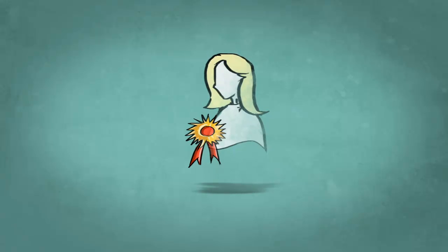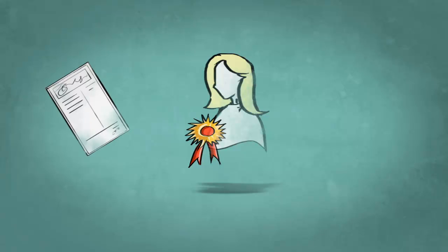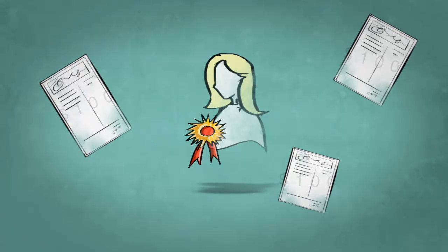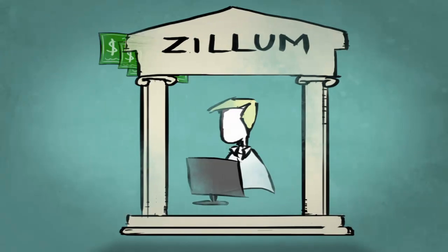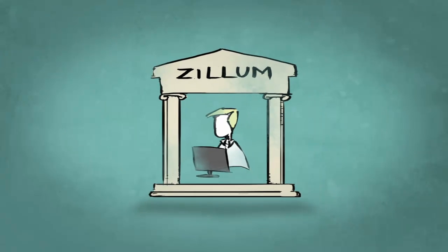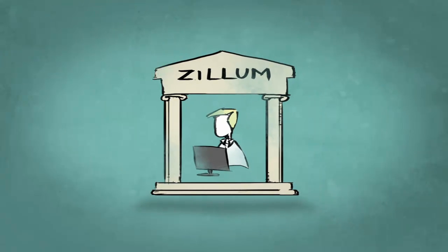Let's say Jane is an esteemed customer of Zillium Incorporated. She receives three invoices from them, each for $100. She makes a payment of $500 — $300 for the outstanding amount, and $200 as an advance towards the next project.